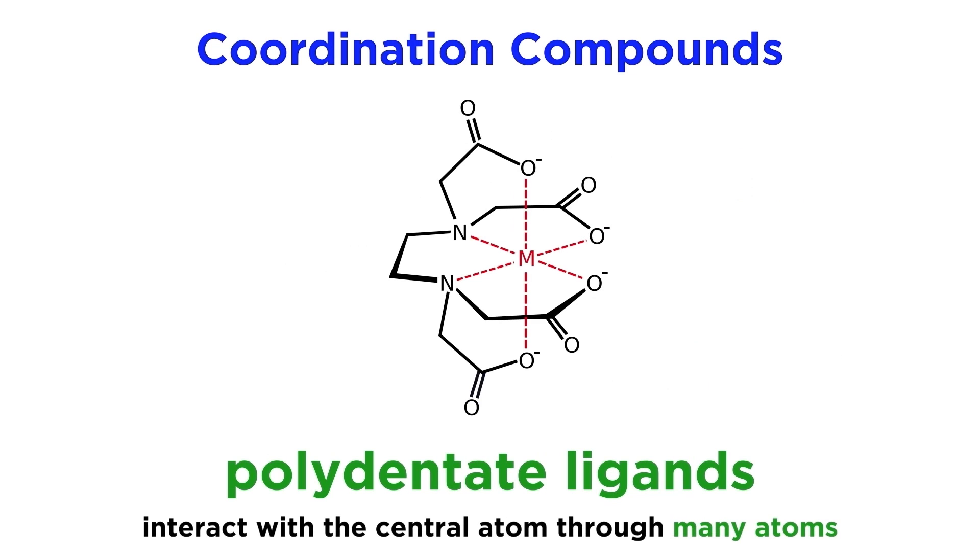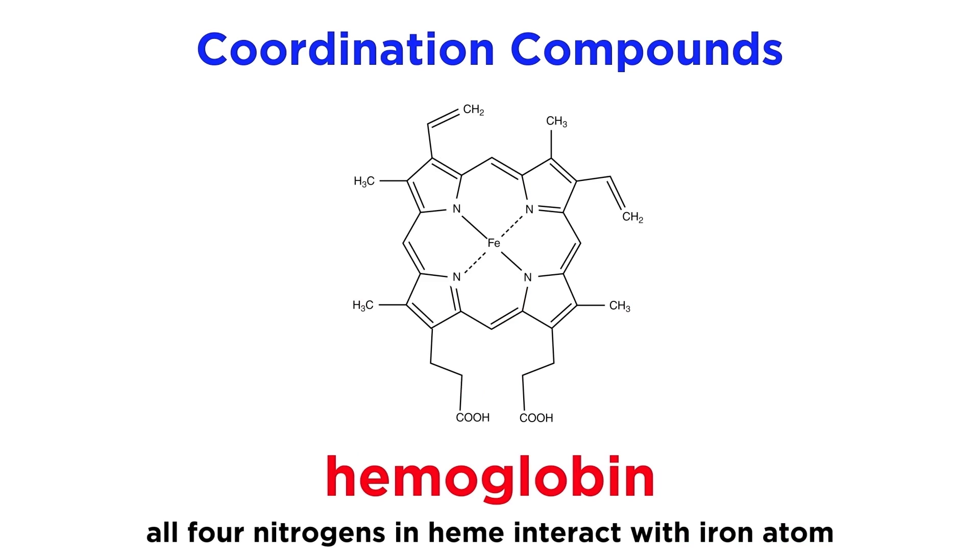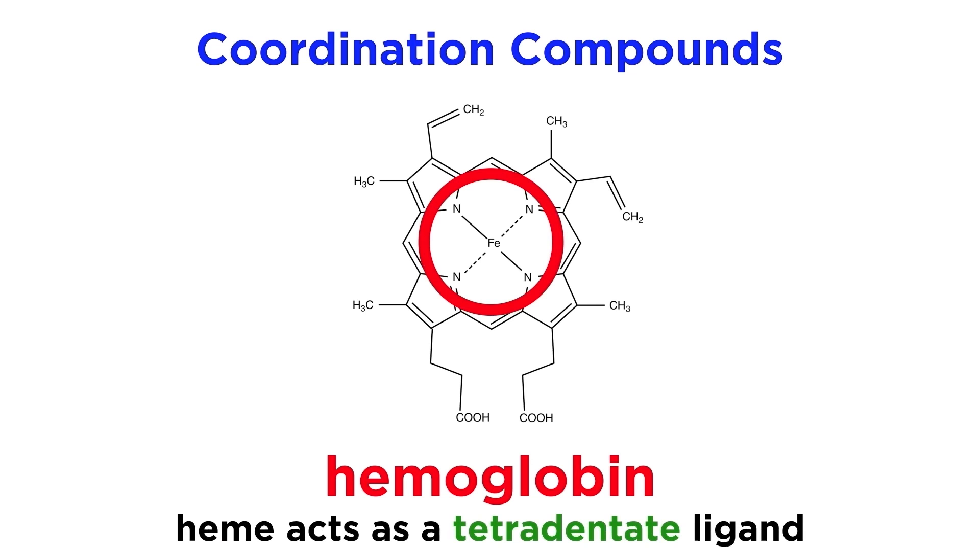There can even be polydentate ligands, where interaction with the metal atom occurs in many places. These can sometimes be called chelating ligands. Hemoglobin is such a ligand because all four nitrogen atoms in the heme are coordinated to the iron atom, so technically this is a tetradentate ligand.